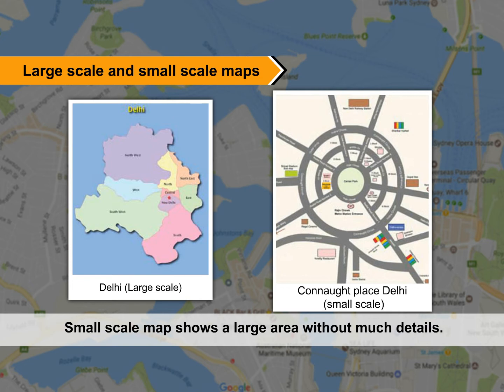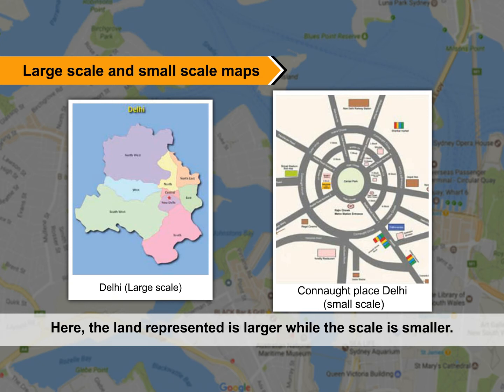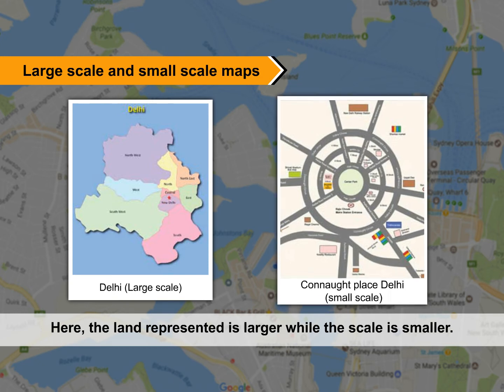Small scale maps show a large area without much detail. Here, the land represented is larger while the scale is smaller.